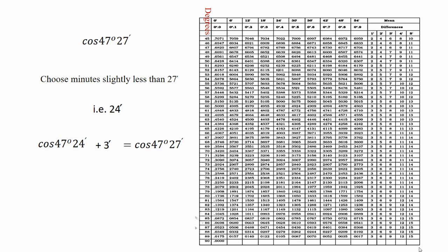Now let's find the value from the table. Choose 47 degrees from the very first column. Along the 47-degree row, observe the value under 24 minutes. Along the same row, observe the value in the mean difference part under 3 minutes. The value of cos(47°24') is 0.6769. Then subtract mean difference 6 from 0.6769, which gives 0.6763. So cos(47°27') = 0.6763.